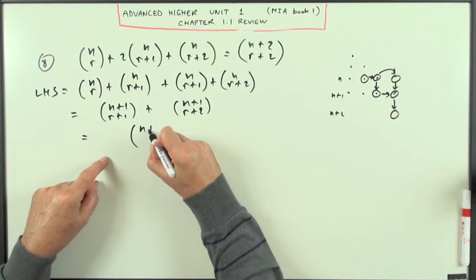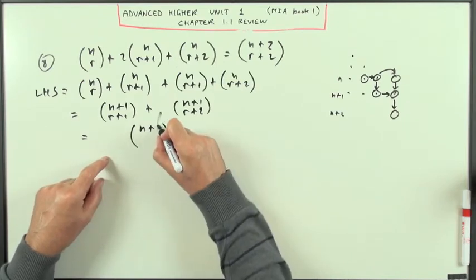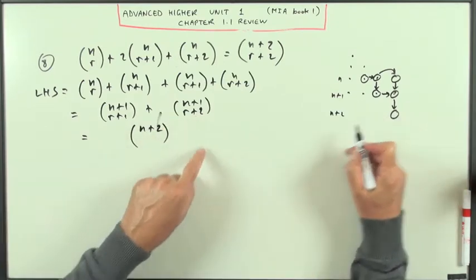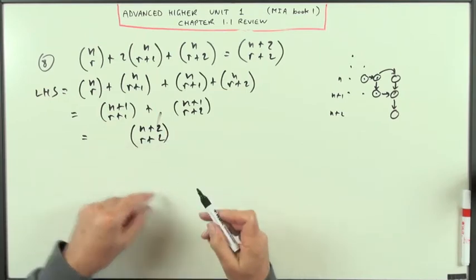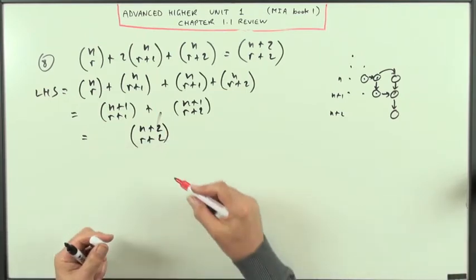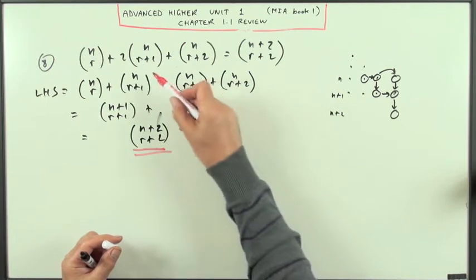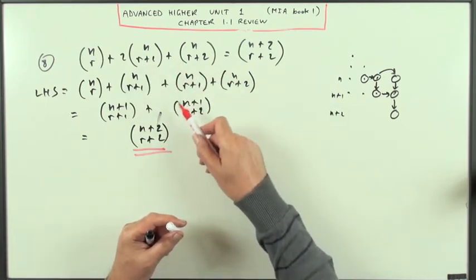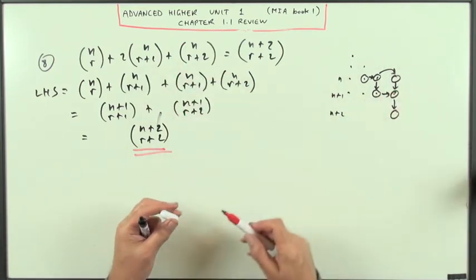So those two together would give me n plus two, and the one below the second one, r plus two, just by using the recurrence relation for the combination coefficients using Pascal's triangle.